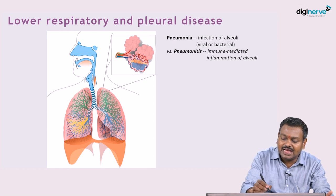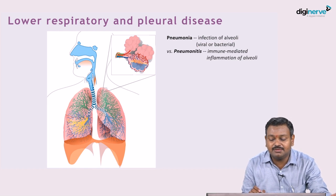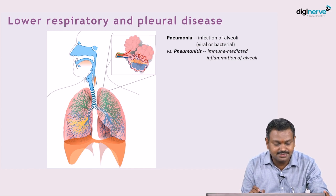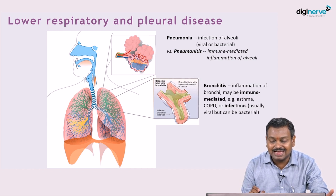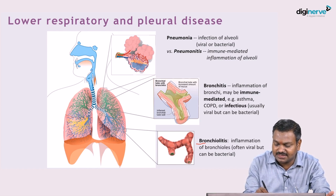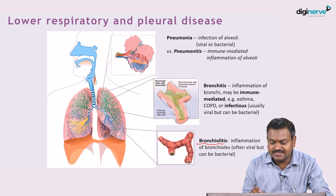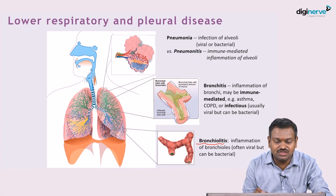Pneumonitis is usually inflammatory, secondary to radiation, chemicals, or certain autoimmune conditions. The second lower respiratory tract infection is bronchitis — inflammation of the bronchi — commonly seen in asthma and COPD, rarely bacterial. The third site is the bronchioles: bronchiolitis involves inflammation of the smaller airways, most often viral followed by bacterial.